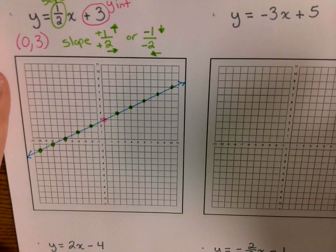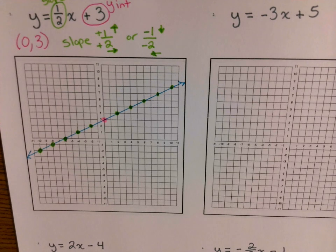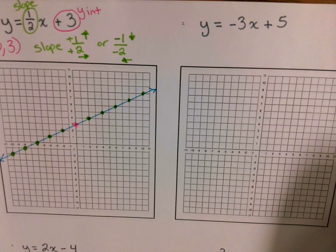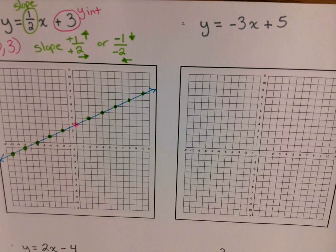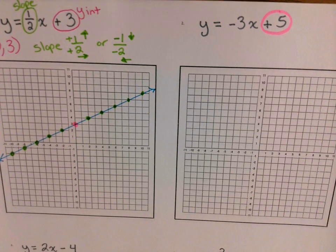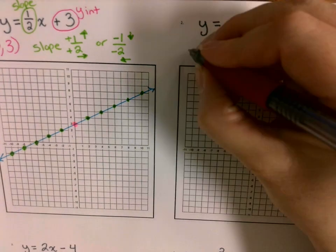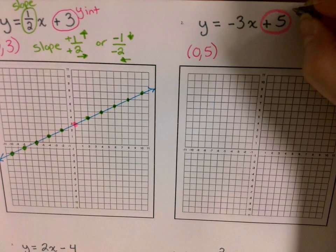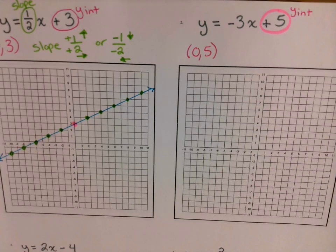Let's take a look at problem two. For problem two, we have y is equal to negative three x plus five. The y-intercept in this equation is a positive five. So when I plot it, I'm going to plot the point (0, 5) — that's my y-intercept. I look at my y-axis and go up to where the five is.